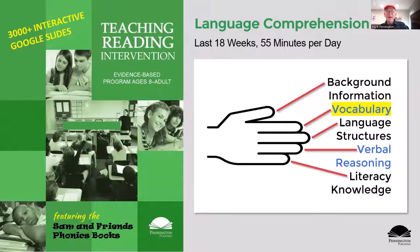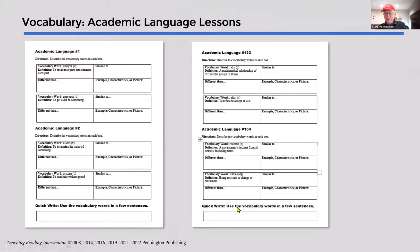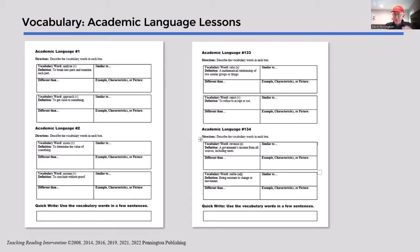The second component of the language strand is vocabulary — specifically the way that Scarborough discusses it, which is a little confusing to teachers. She's talking about academic language. As reading intervention teachers know, it's not the tier one oral language words, nor the tier three domain-specific words that we need to teach, but the more generalizable tier two academic words. Isabel Beck and team does a wonderful job in Appendix A of the Common Core State Standards explaining that rationale.